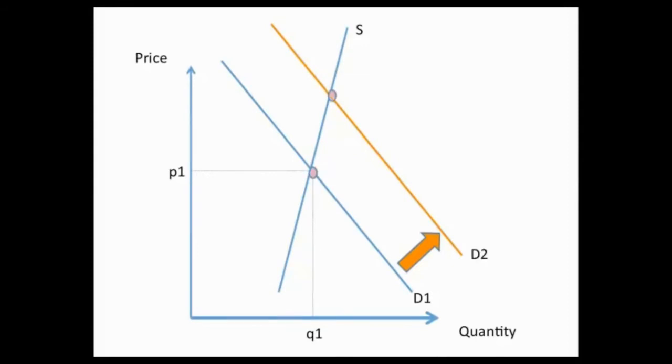What we have therefore at the old price is an excess quantity demanded, and this leads to upward pressure on the price and we end up at a new equilibrium at P2Q2.